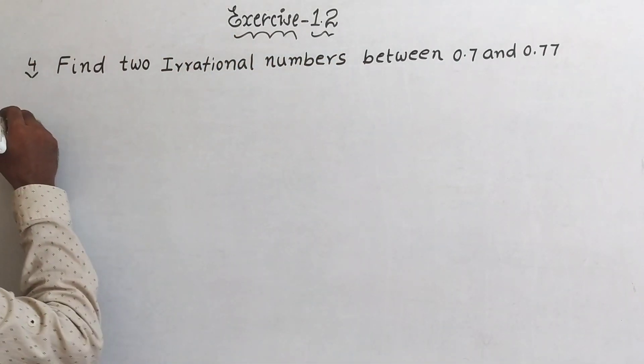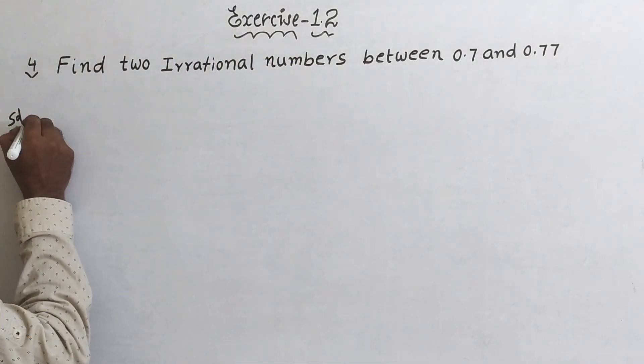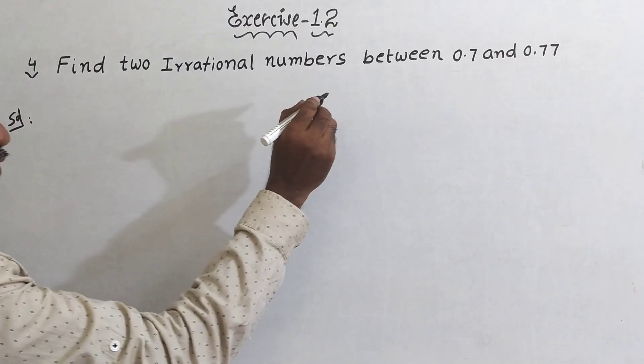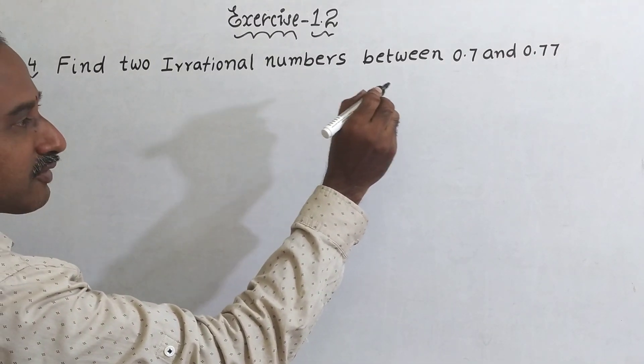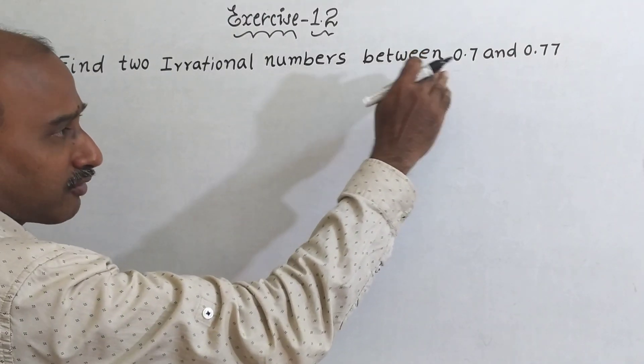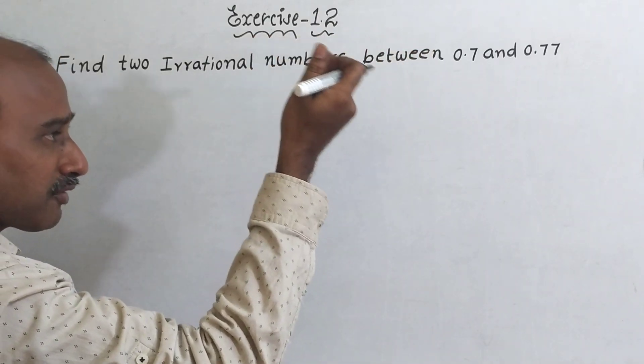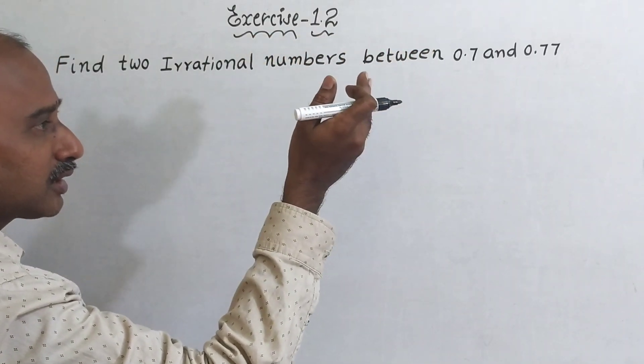Now come to the solution. Between 0.7 and 0.77, after 0.7 there is 0.71, 0.72 is there, 0.73 is there.